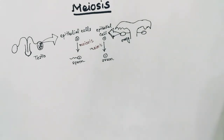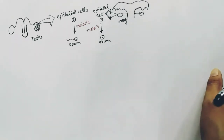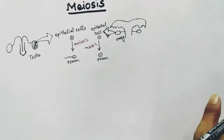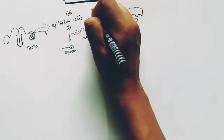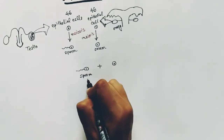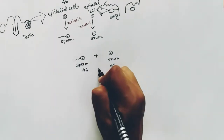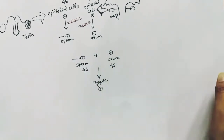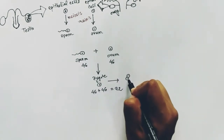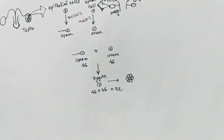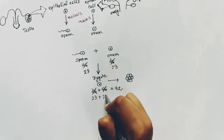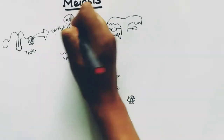Meiosis plays a vital role in conserving the number of chromosomes in a species. If meiosis was not there and it was only mitosis, then the sperms and ovums would also have the same number of chromosomes as the body cells. In humans, the number of chromosomes is 46. So if it were mitosis, sperms and ovums would also have 46 chromosomes, and when they fuse to form the zygote, the zygote would have 46 plus 46 equal to 92. To conserve the chromosome number, meiosis reduces it so the sperm has 23 and the ovum has 23, conserving the total to 46.